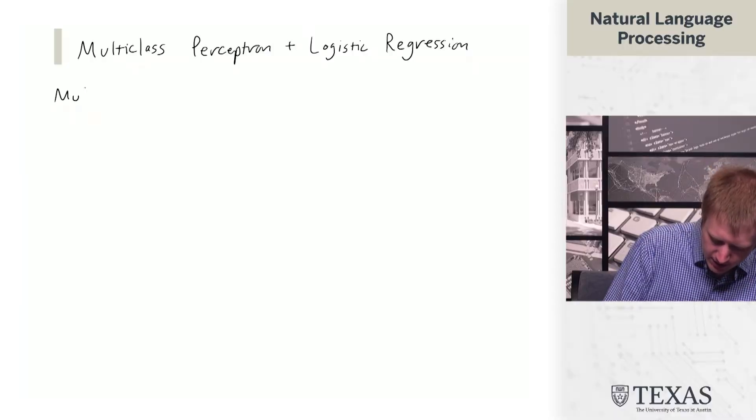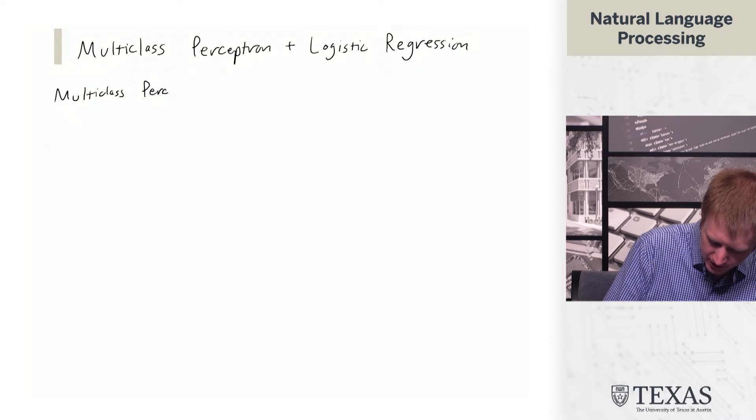In this segment, we're going to talk about the multiclass generalizations of perceptron and logistic regression. These algorithms are going to look roughly similar as before, but now we're going to have to deal with the fact that there are these multiple possible classes that we can predict, and there's many different types of mistakes that we can make. So we're going to dive into multiclass perceptron, and then we're going to see an example of it.